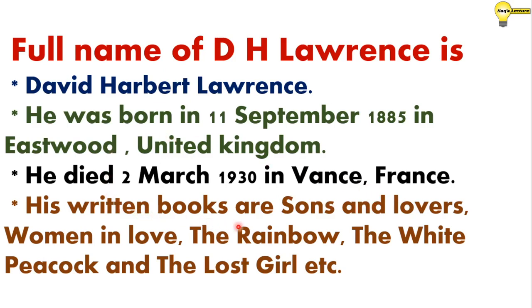His written books are Sons and Lovers, Women in Love, The Rainbow, The White Peacock, and The Lost Girl, etc. So we can understand about this famous poet. Now we are going to read about his poem, which is in our syllabus.